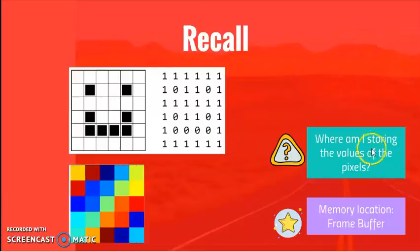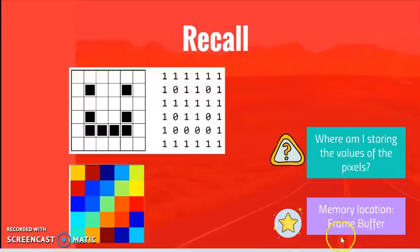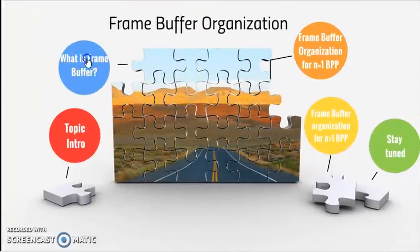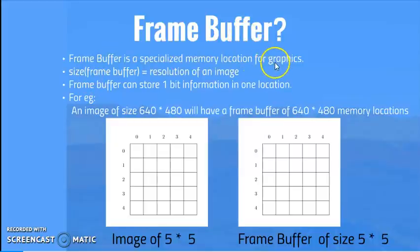So the main problem domain for today is: where am I storing the values of the pixels? For the first pixel I'm storing a 1, for the second pixel a 1, for the black pixel a 0. So where am I storing all these things? The answer is we are storing all these things in a memory location called the frame buffer. Buffer is nothing but a memory, and frame is a grid — so a memory grid is a good definition for a frame buffer. Frame buffer is a specialized memory location for graphics, and whenever I want to store pixel information, I go to the frame buffer.